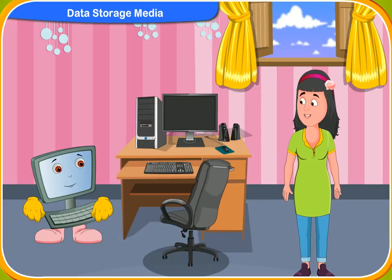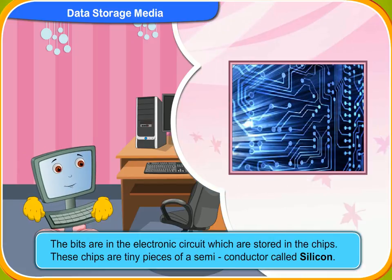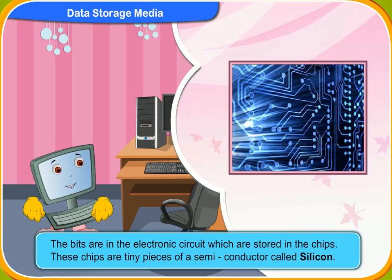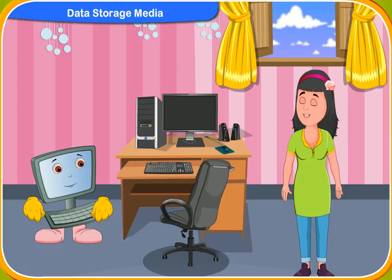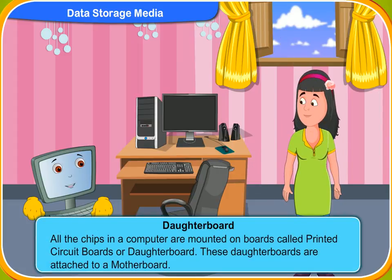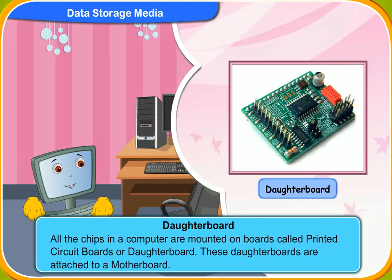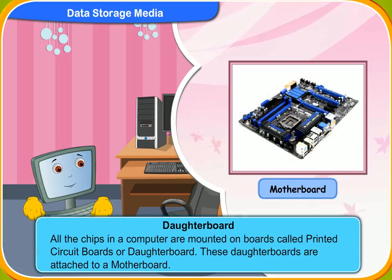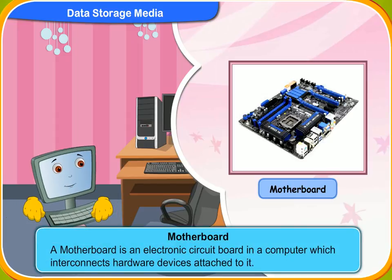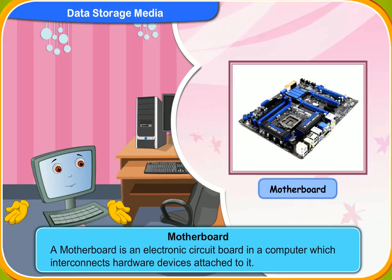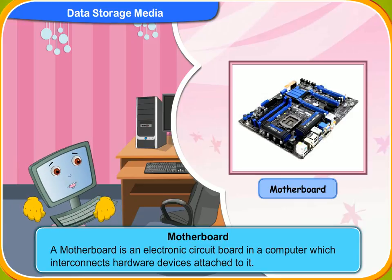Where are these bits found in the computer? The bits are in the electronic circuits which are stored in the chips. These chips are tiny pieces of semiconductor called silicon. Millions of circuits are assembled on each chip. Where are the chips in the computer? All the chips in a computer are mounted on boards called printed circuit boards or daughter boards. These daughter boards are attached to a motherboard. This is the motherboard in a computer. A motherboard is an electronic circuit board in a computer which interconnects hardware devices attached to it. One or more central processing units are attached to a motherboard.